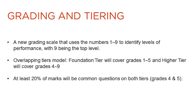The new grading system uses the numbers 1 to 9 to identify levels of performance, with 9 being the top level and 1 being the bottom. The tiering system used is an overlapping tiers model where foundation tier will cover grades 1 to 5 and higher tier will cover grades 4 to 9. At least 20% of the marks will be common questions on both tiers at grades 4 and 5.